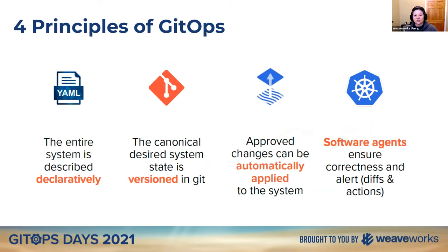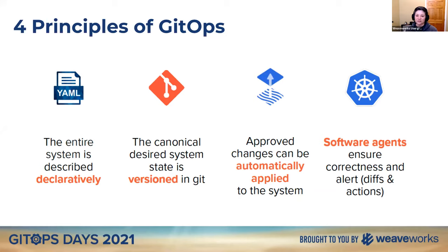The principles of GitOps: anywhere you start is a great way to begin your journey. Whether you're using Git as your versioning system or not, the important thing is that you're using a versioning system. Other core principles are a declarative system, automatically applied changes, and reconciliation ensuring correctness with alerts. If you want to learn more, check out our YouTube channel for 'what is GitOps' sessions from previous GitOps Days.